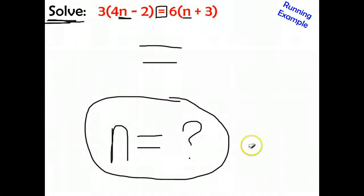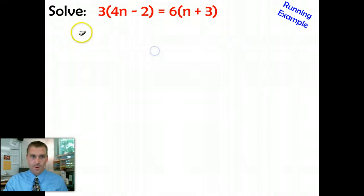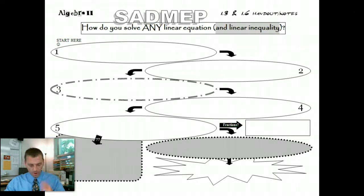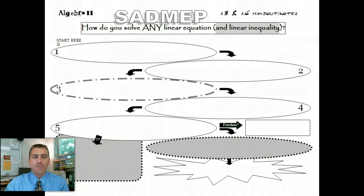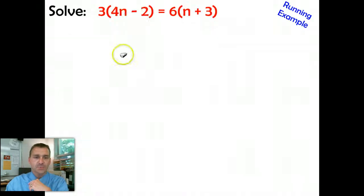On your graphic organizer, step number one that you need to write down is this: Change any and all subtraction signs. Now, I put this little asterisk over here because it's optional. If you don't want to do that, you don't have to.